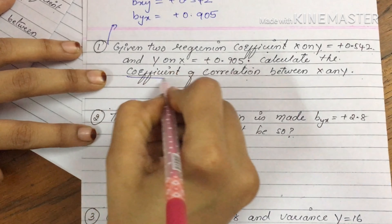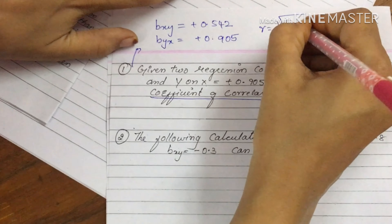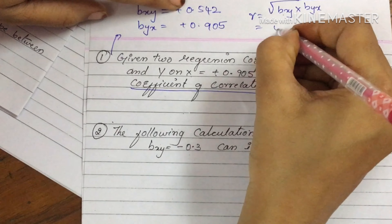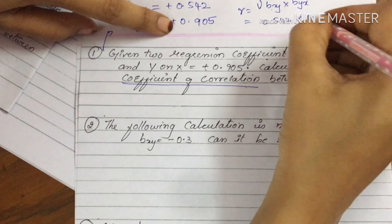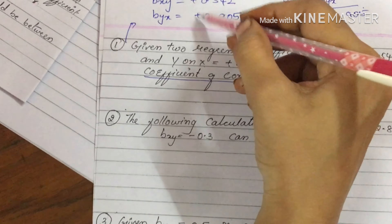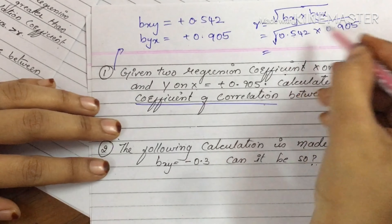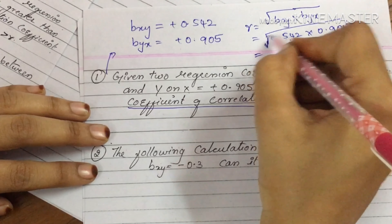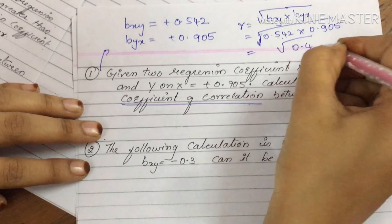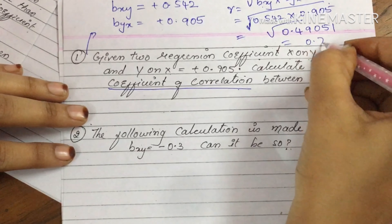Coefficient of correlation formula: r equals under root of bxy into byx. So, r = under root of 0.542 into 0.905. First, check the signs of both — both signs are similar, so we can proceed. Multiply the two: under root of 0.49051. The answer is 0.70.